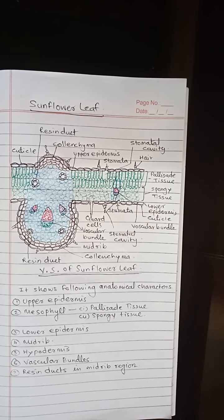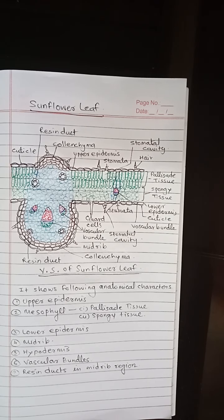The sunflower leaf internally shows the following structures: Upper Epidermis, Lower Epidermis, and in between the Upper and Lower Epidermis, Mesophyll Tissue, Mid Rib Region, Hypodermis, and Vascular Bundles.